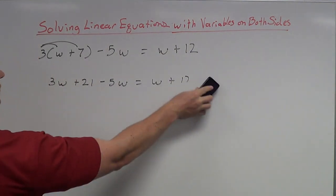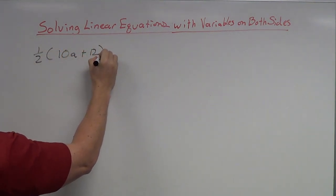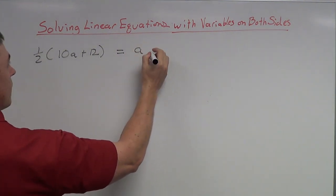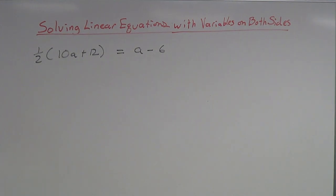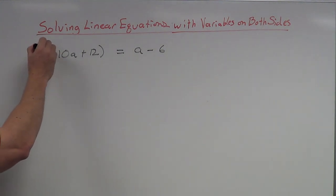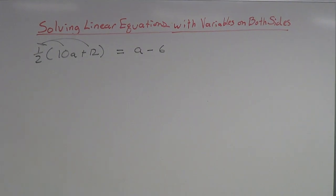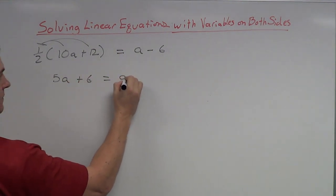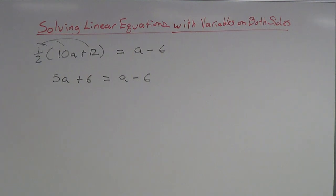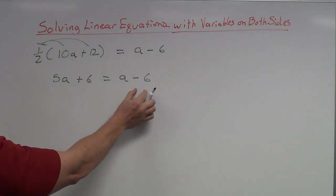One more example: one half times the quantity 10A plus 12 equals A minus 6. A lot of students will have anxiety with this one because of the one half out front — don't worry about that. It's not difficult to distribute a one half. Just say to yourself: take one half of 10 and one half of 12. That 'of' word in mathematics means multiply. So half of 10 is 5, giving 5A, and half of 12 is 6. After distributing, the 5A and 6 don't combine, so we now have 5A plus 6 equals A minus 6.